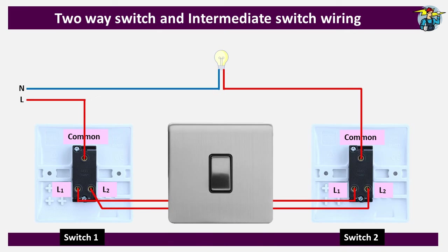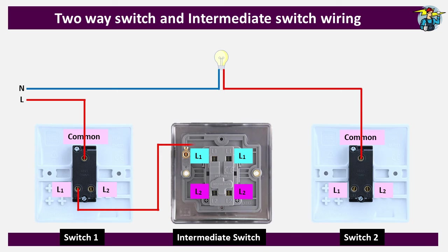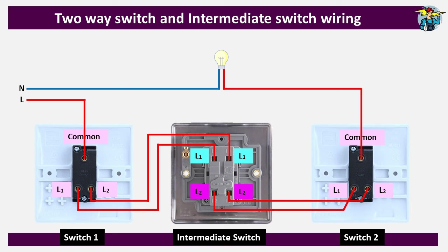Now let's see how an intermediate switch is wired into a circuit. Intermediate switches are required for long corridors or staircases running more than two stories. The two-way switches remain at the start and end positions, with one or more intermediate switches in the middle. The phase and neutral wires connected through the two Common ports of the two-way switches remain unchanged. The two L1 terminals of the two-way switches are connected together, but the connection runs through one set of L1 and L2 terminals on the intermediate switch. The two L2 terminals of the two-way switches are similarly connected through the remaining set of L1 and L2 terminals on the intermediate switch.